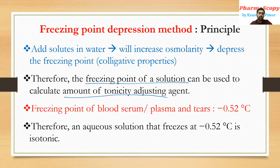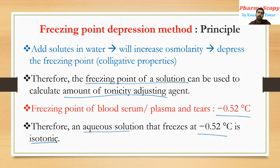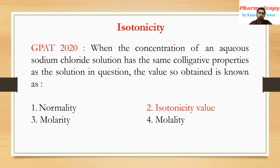The freezing point of blood serum, plasma, or tears is −0.52 degrees Celsius. Please remember this: if a solution has the same freezing point of −0.52°C, it is isotonic with blood serum. The 0.9% w/v NaCl aqueous solution, which freezes at −0.52 degrees Celsius, is isotonic with human plasma — that is why we use it as a tonicity adjusting agent.